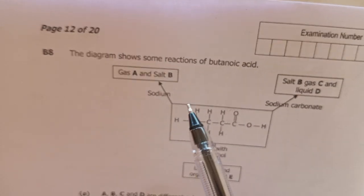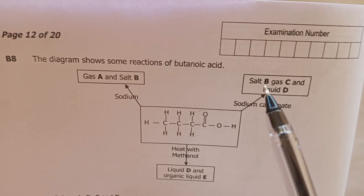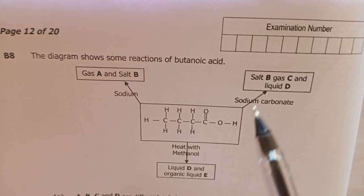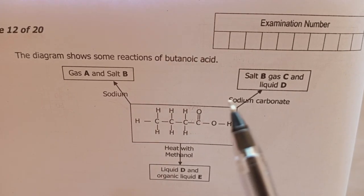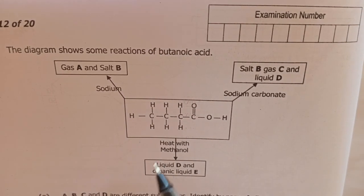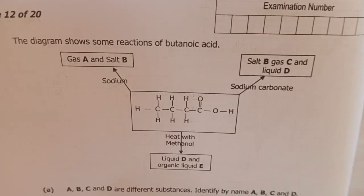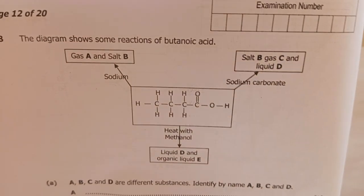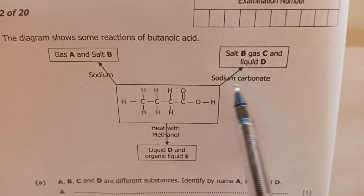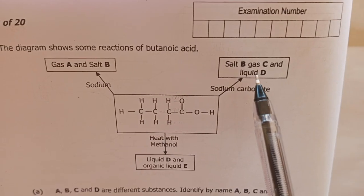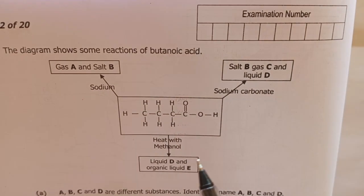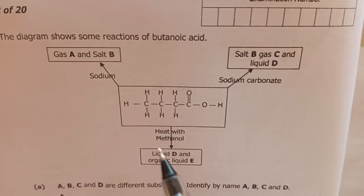Here B is also sodium butanoate because we have sodium carbonate. Whenever an acid reacts with a carbonate, the products are three: the salt, carbon dioxide gas, and water. So liquid D is water and gas C is carbon dioxide gas.